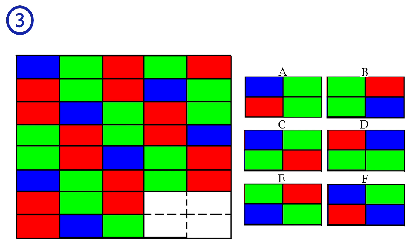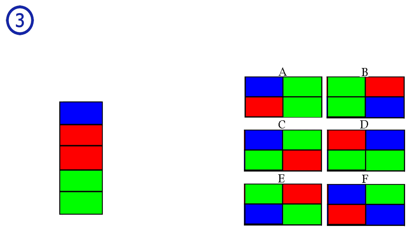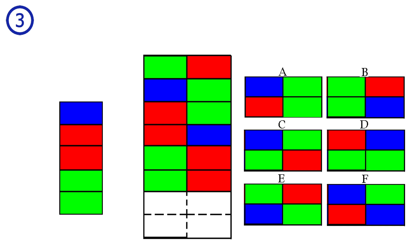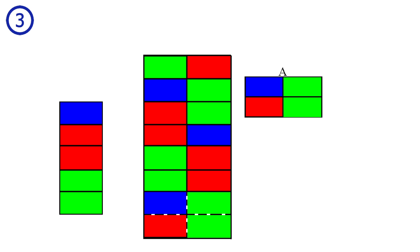Puzzle number three. In the columns of this puzzle, we have a repetition of five colors: blue, red, red, green, green. The left column of the answer just finished one unit, so we start over again at the top — blue, red. The right column of the answer is in the middle of a unit: blue, red, red, green, green. Answer A is correct.